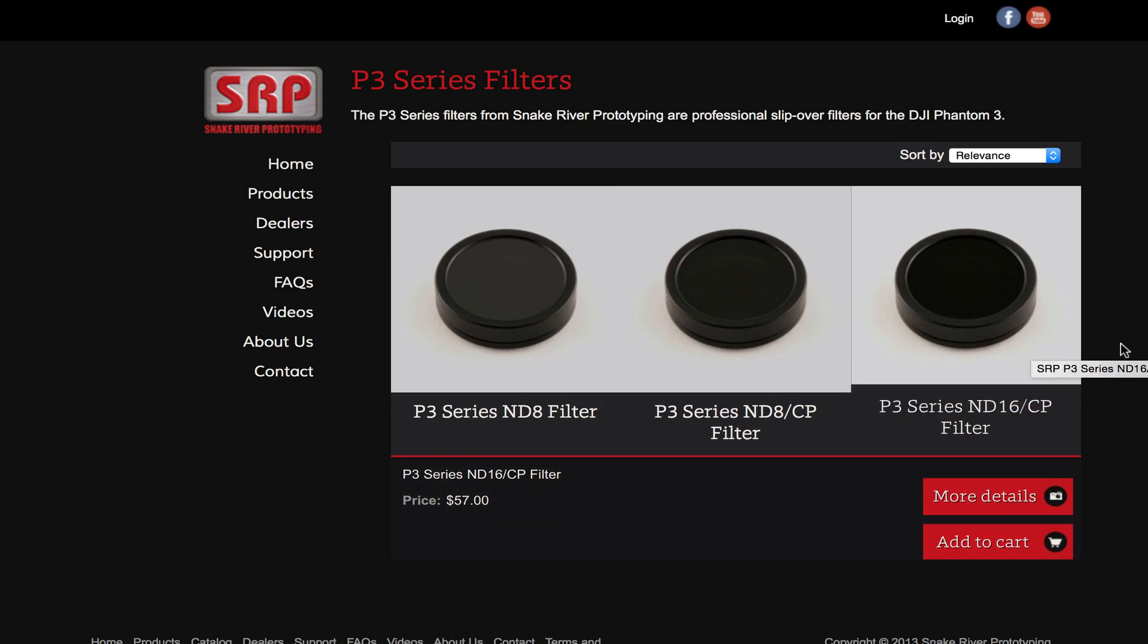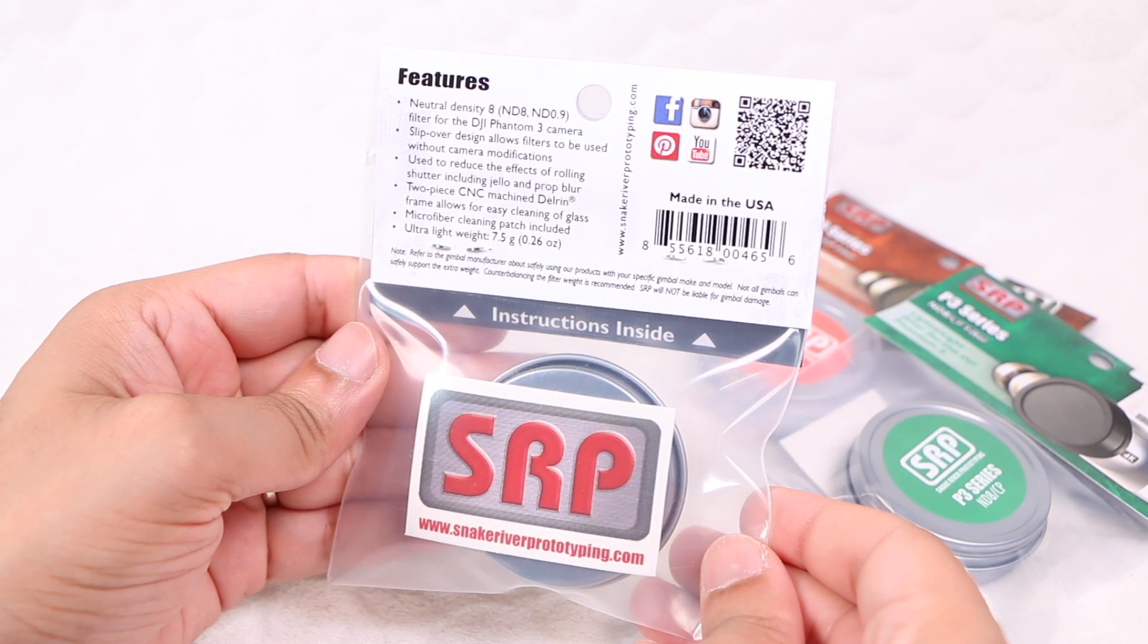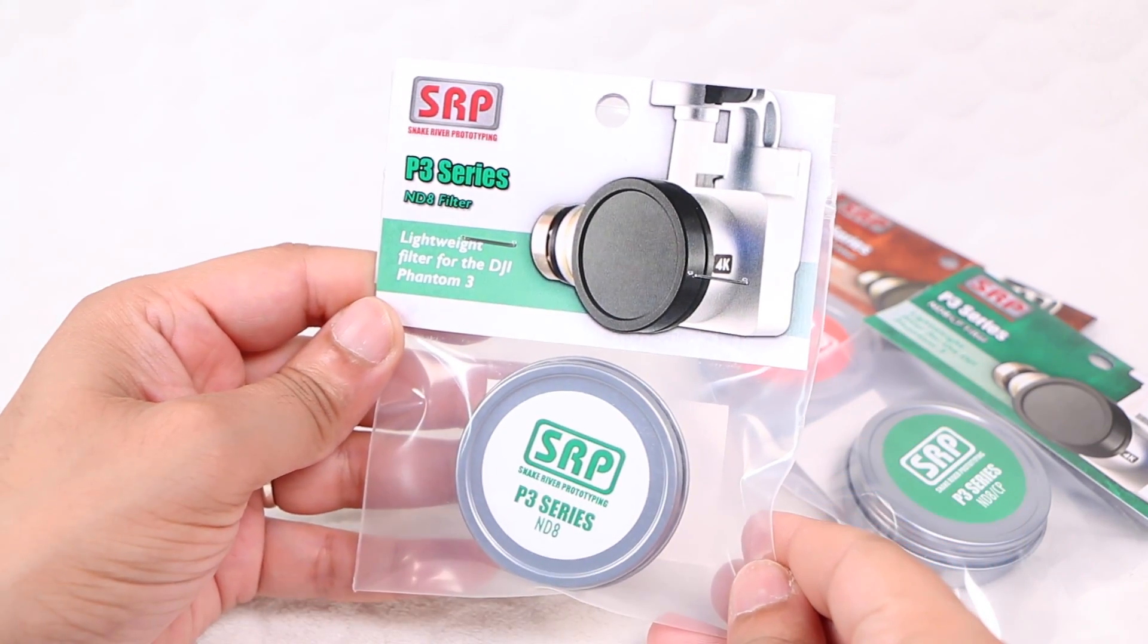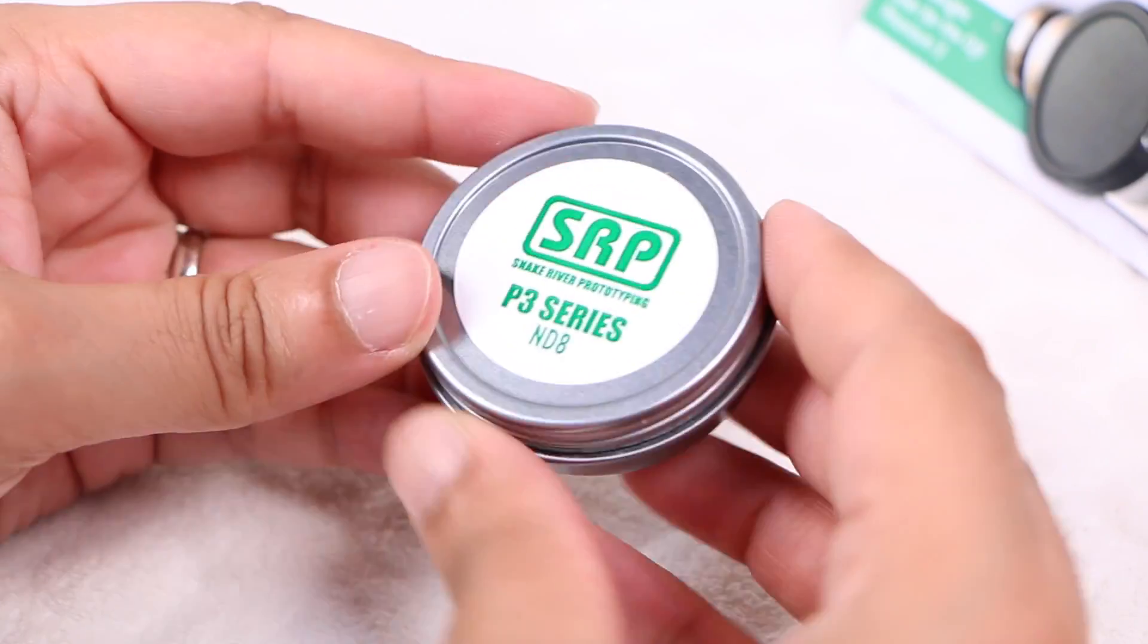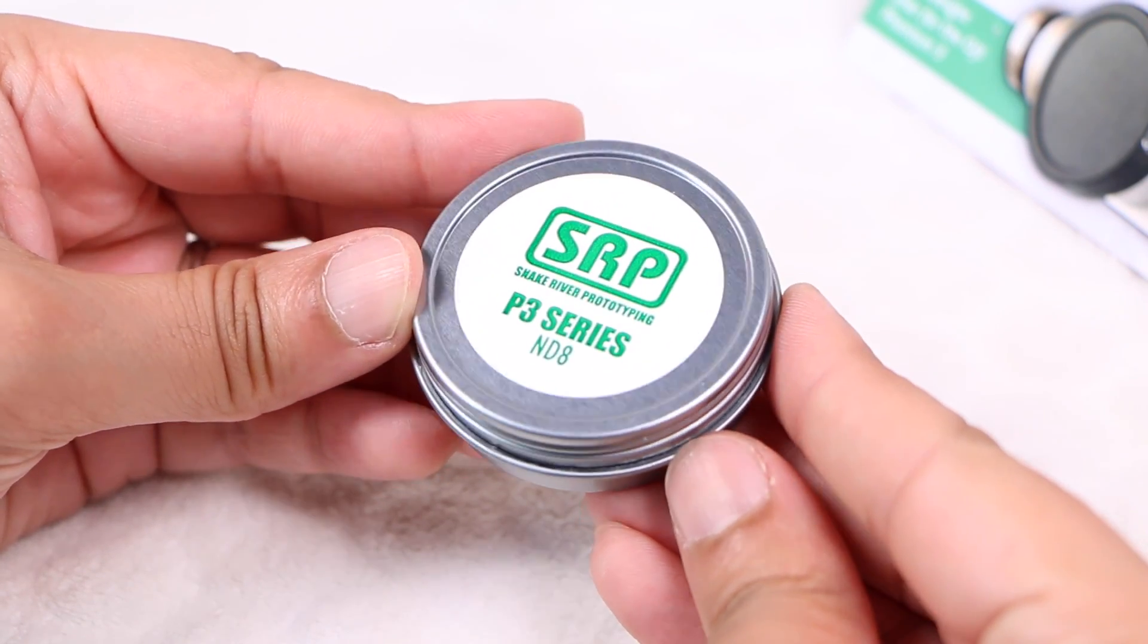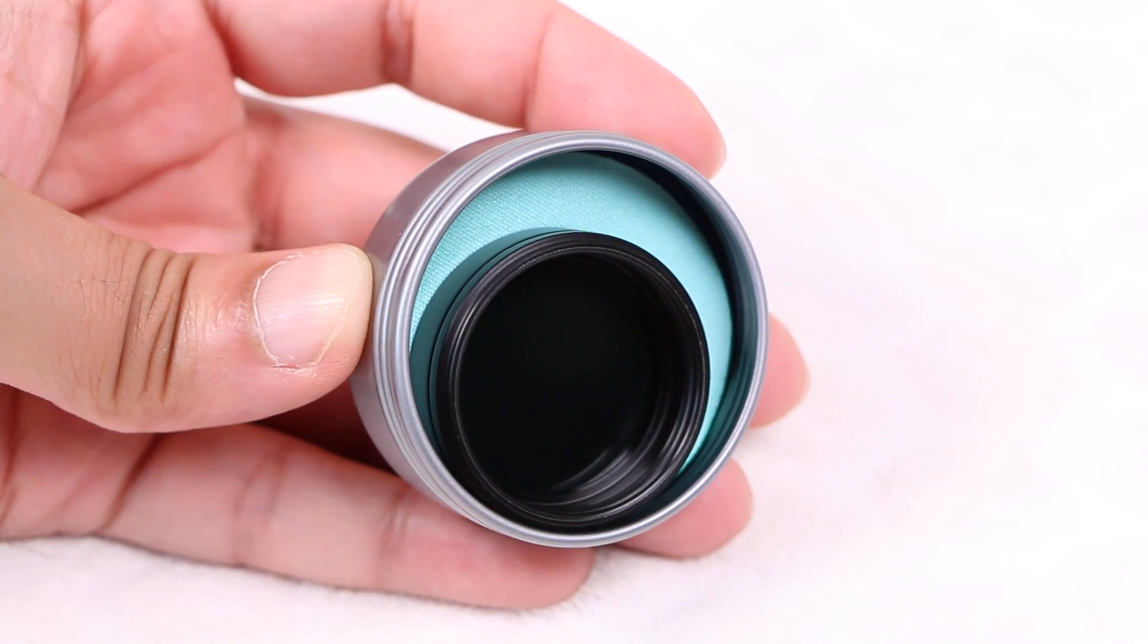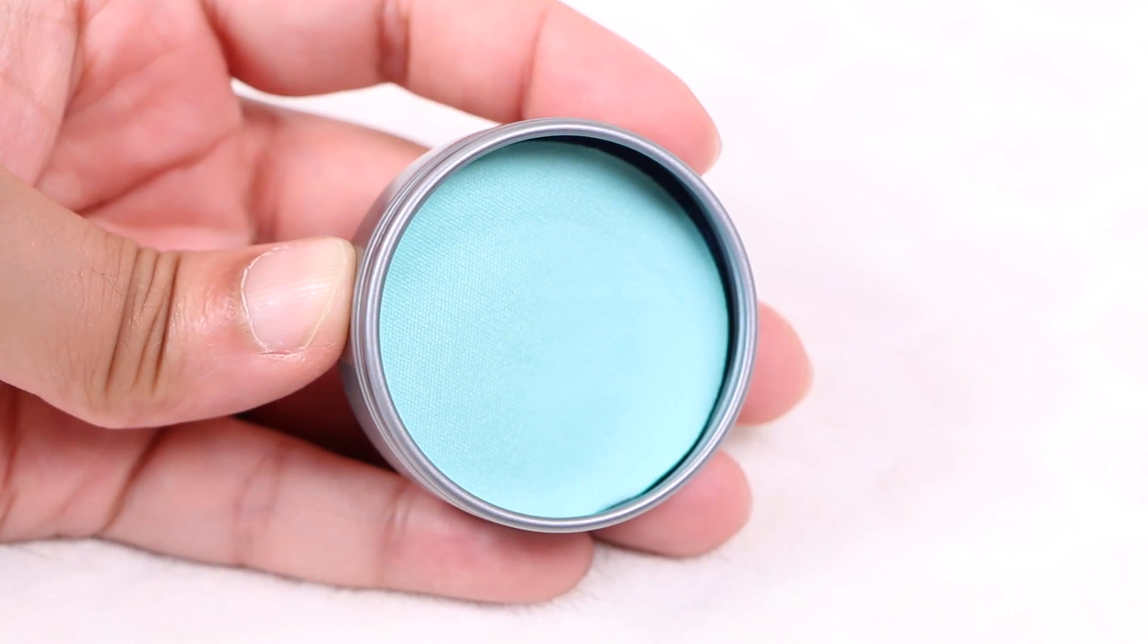Available in ND8, ND8 polarizer, and ND16 polarizer variants, each filter is presented in a metal tin, very handy for storing the filter safely in your Phantom carry bag when not in use. Within each tin, users will find the filter itself along with a handy microfiber cleaning cloth.